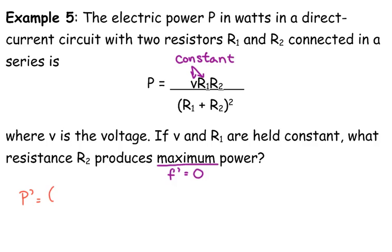We have low D high. But the top, V and R1 are constants, R2 is the variable, so the derivative of that would be V R1. It's just like we had 8X or something in the top. The derivative of that is just the constant.